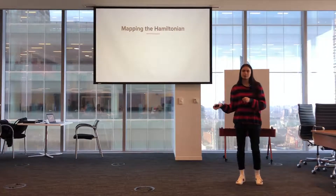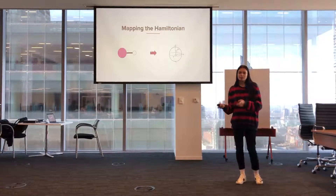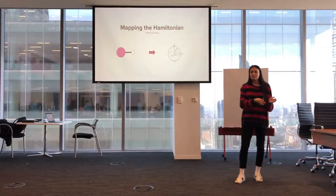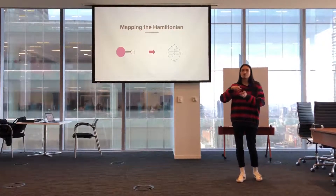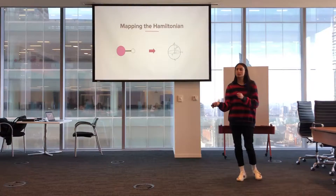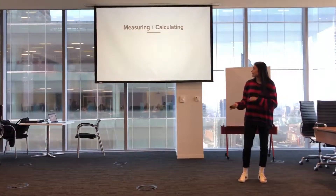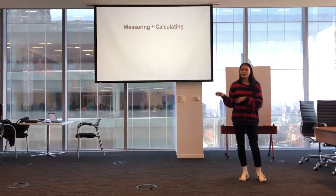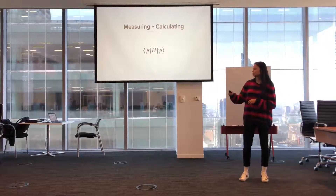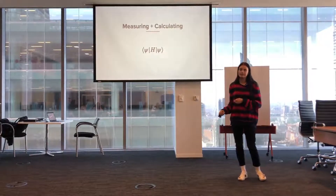After that, I had to map the molecular Hamiltonian into a qubit Hamiltonian. Essentially, I'm taking the matrix that represents all the molecule's energies and mapping it so the quantum computer can mimic the molecule and perform calculations with it as if we were actually working with the molecule itself. Then I had to measure all the values and calculate the expectation value using the trial state created from our ansatz.